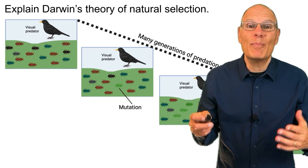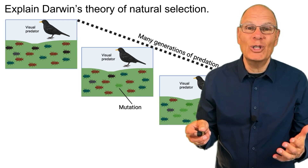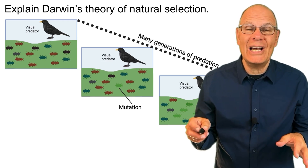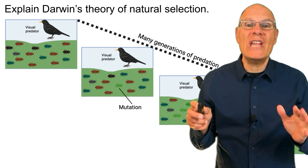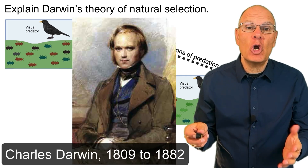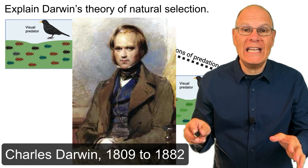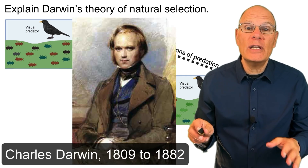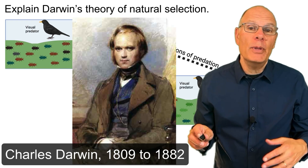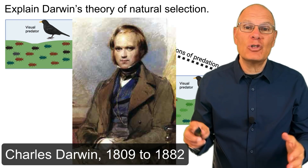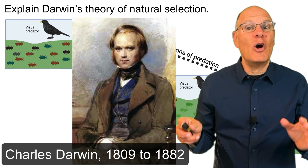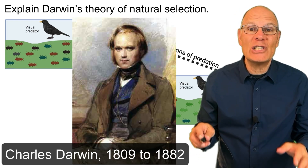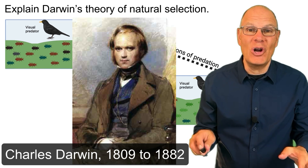In terms of understanding the process of evolution, the most important idea to understand is natural selection, developed by Charles Darwin in the 1800s. Darwin himself built the idea of natural selection upon the foundation of artificial selection, so that's where we're going to start.